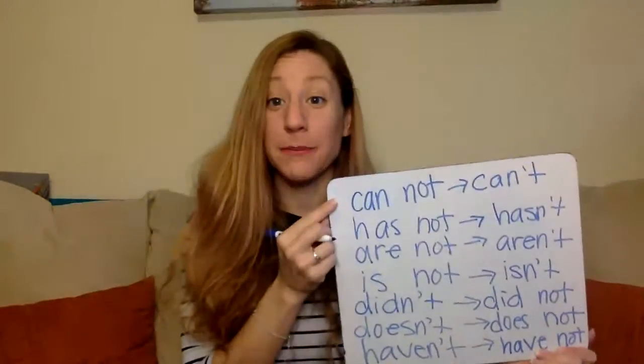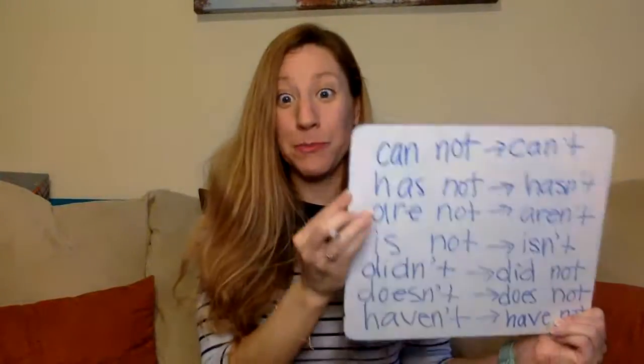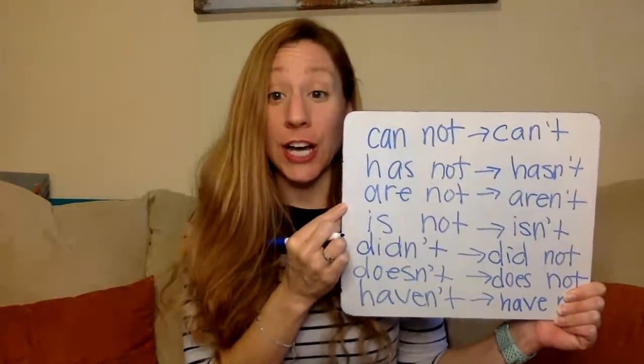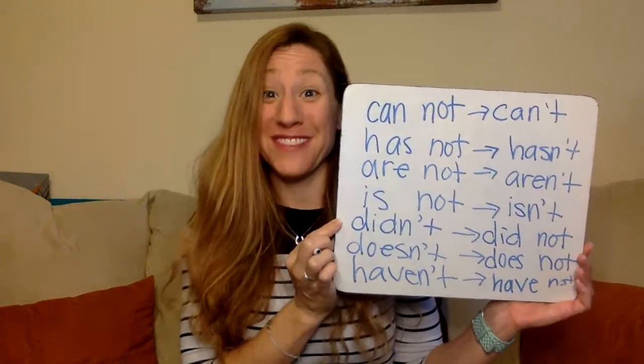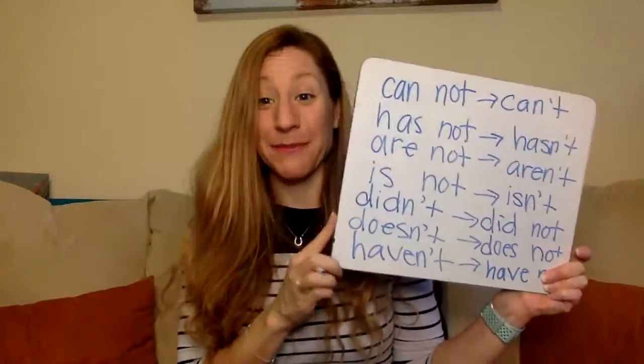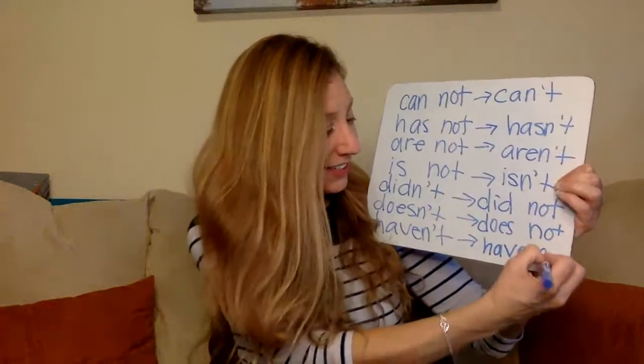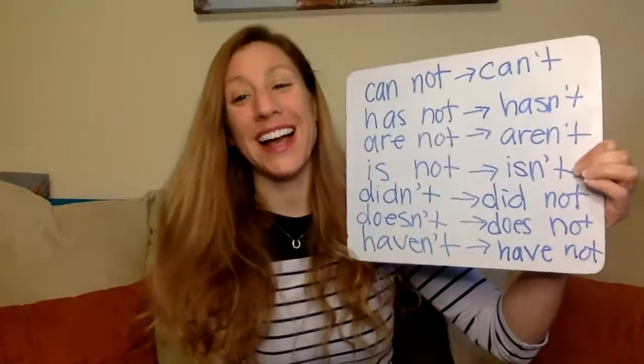So here: cannot becomes can't, has not becomes hasn't, are not becomes aren't, is not becomes isn't, didn't came from did not, doesn't comes from does not, and haven't comes from have not. We'll keep working on contractions this week — we haven't discussed them in a little while and we're going to be doing some work with them in the workbook page and in the games online this week. So have fun practicing those and happy learning!